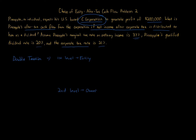For the first level of tax, we have $200,000 of profit generated. We multiply that by the corporate tax rate of 21%, which gives us a tax amount of $42,000 — that's the corporate tax paid by the corporation on Form 1120.